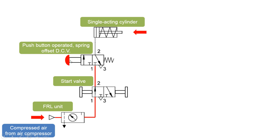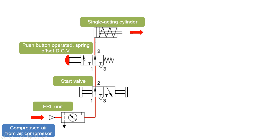If we operate the push button, we get the left envelope mode so that this line gets connected to the cylinder. Now with the push button pressed, the left envelope mode is in operation and the air is admitted on the cylinder side of the piston, causing the forward motion of the single acting cylinder.